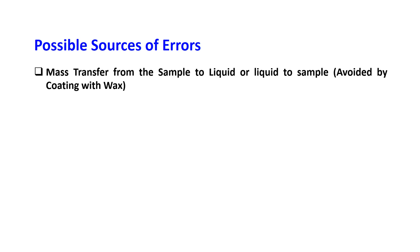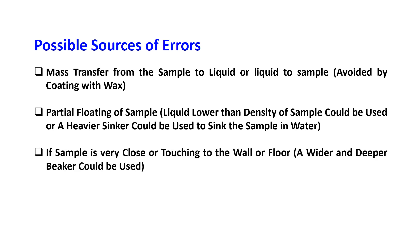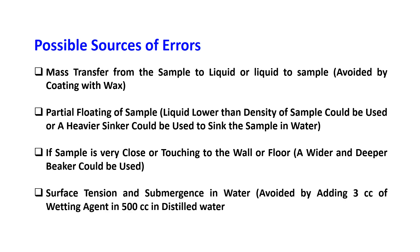Possible sources of error are: mass transfer from the sample to liquid or liquid to sample — this can be avoided by coating with wax. Partial floating of the sample — a liquid with lower density than the sample could be used, or a heavier sinker could be used to sink the sample in water. If the sample is very close to or touching the wall or floor, a wider and deeper beaker should be used. Surface tension during submergence in water can be avoided by adding 3 cc of wetting agent in 500 cc of distilled water.